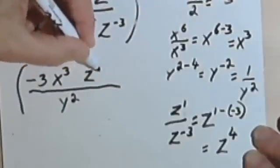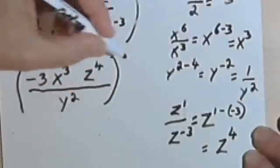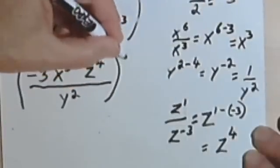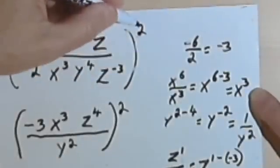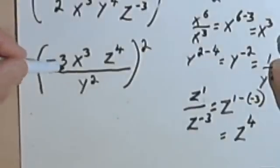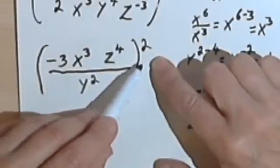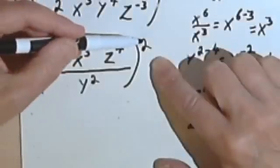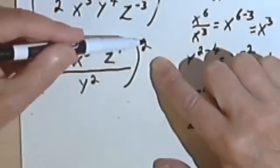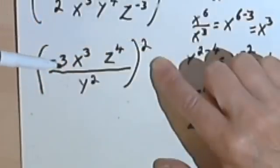I can put that z to the fourth in the expression, finish the parentheses, and add the second power which we had in the original. So this is a lot cleaner already. When we have something in parentheses raised to a power, we take that power and multiply it by each of the exponents inside the parentheses.